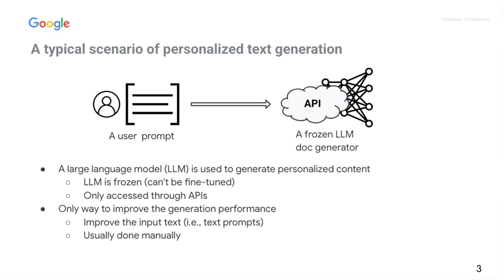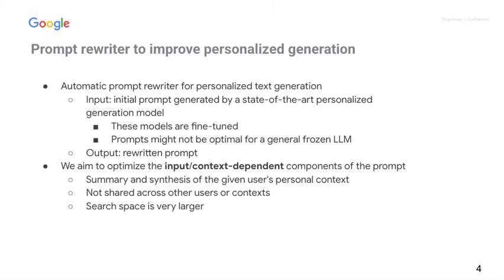In this setting, the only way to improve the generation performance is to improve the text prompts. This is usually done manually. We aim to develop an automatic prompt rewriter for personalized text generation. The input of the prompt rewriter is the initial prompt generated by a state-of-the-art personalized generation model. These models are fine-tuned, and their prompts may not be optimal for a general frozen LLM.